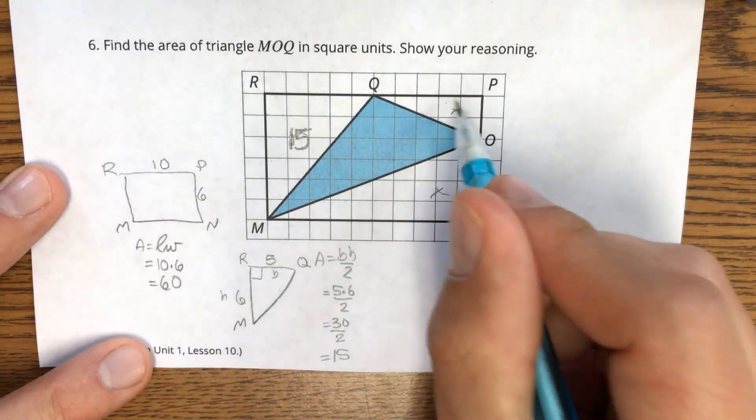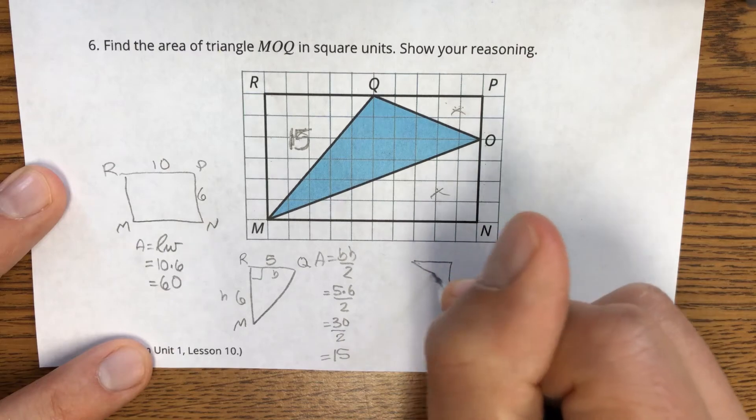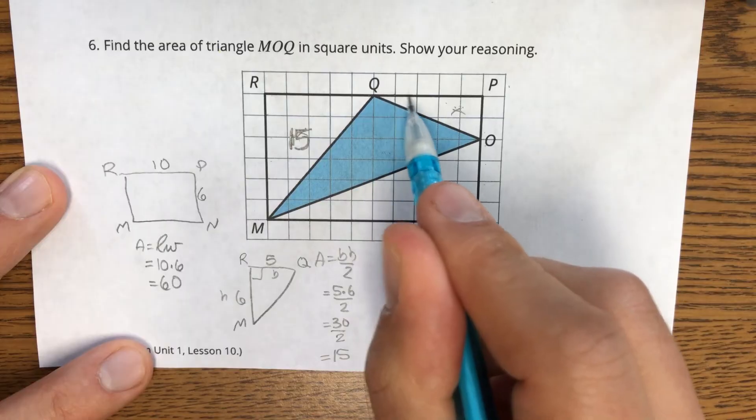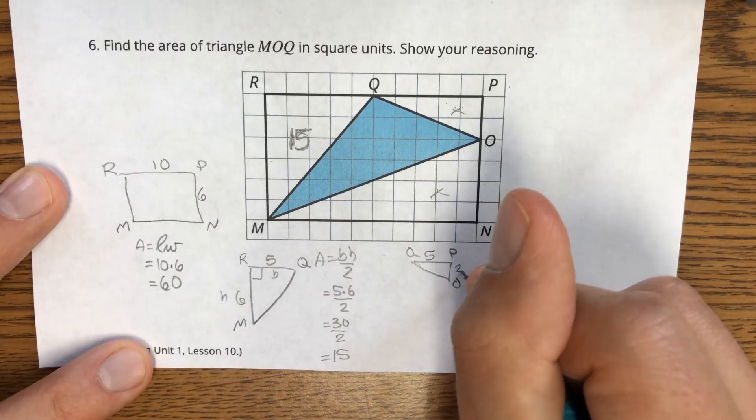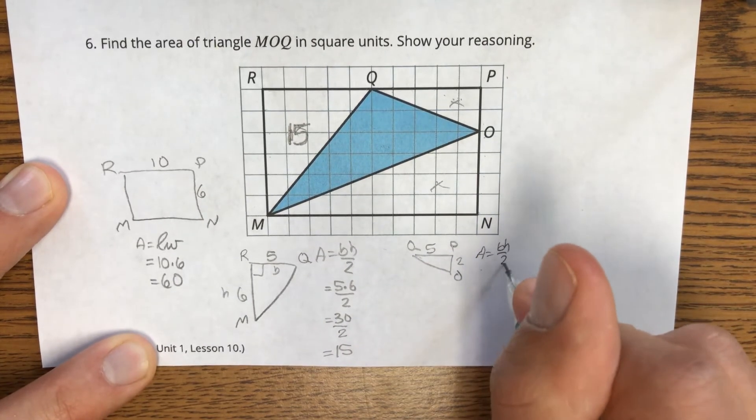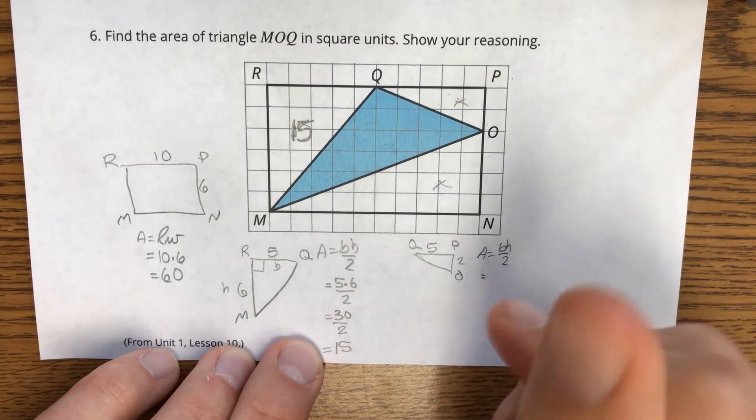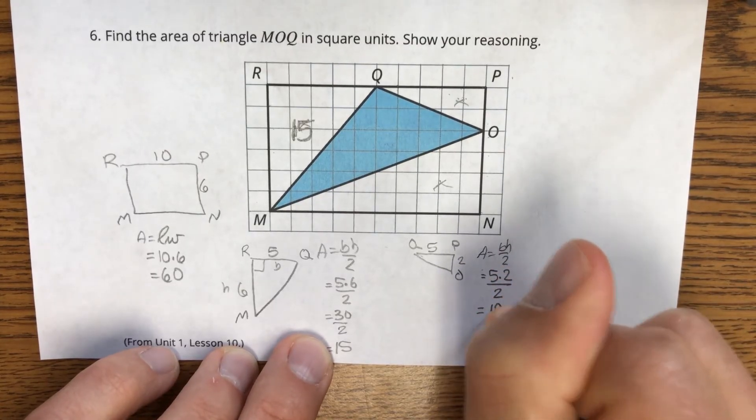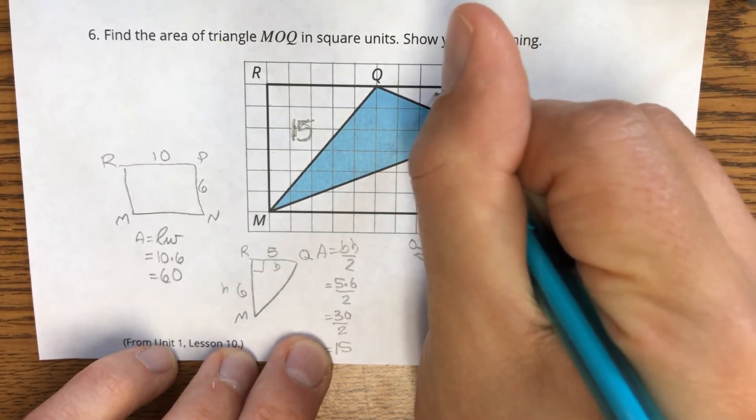Now what about, we'll come up here to Q, P, O. From Q to P, one, two, three, four, five. P to O is just two. Once again, if area is equal to base times height divided by two for triangles, that means we're going to have our base of five, a height of two, and divide it by two. So 10 divided by two is five. So this area is five.